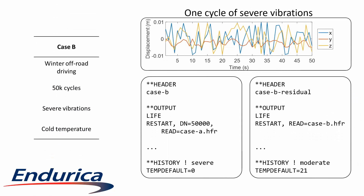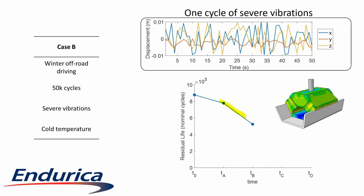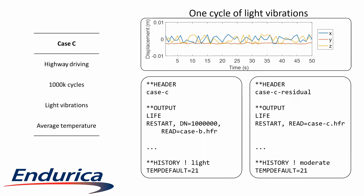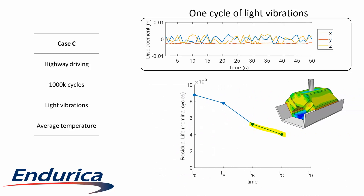For case B, the first analysis sets the history to the severe vibrations at a colder temperature. It reads the restart information from case A and integrates the history for 50,000 cycles. The residual life analysis reads its initial state from the end of case B and integrates until end of life. Here you can see that the 50,000 severe vibration cycles of case B decreased the life by more than the 100,000 vibration cycles from case A. This same process continues for case C, where we accumulate 1,000,000 light vibration cycles and then compute the residual life. Case C decreases the life by a similar amount to case A.